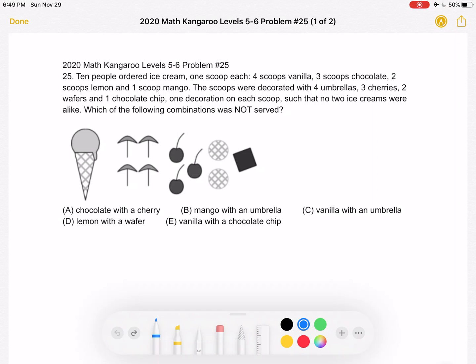A: chocolate with a cherry, B: mango with an umbrella, C: vanilla with an umbrella, D: lemon with a wafer, or E: vanilla with a chocolate chip.